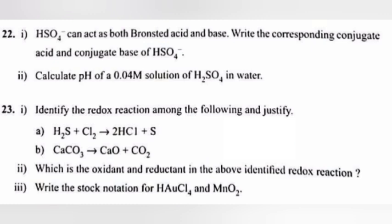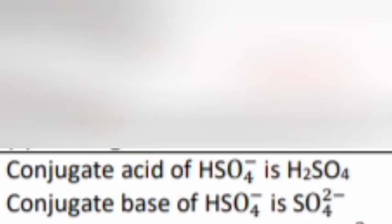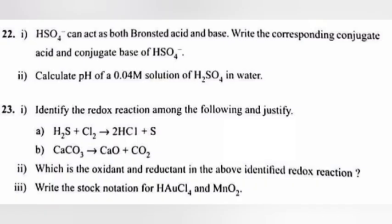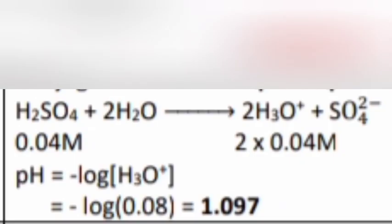Question 22: 1. HSO4 minus can act as both Bronsted acid and base. Write the corresponding conjugate acid and conjugate base of HSO4 minus. Answer: Conjugate acid of HSO4 minus is H2SO4. Conjugate base is SO4 2 minus. 2. Calculate pH of 0.04 M solution of H2SO4.